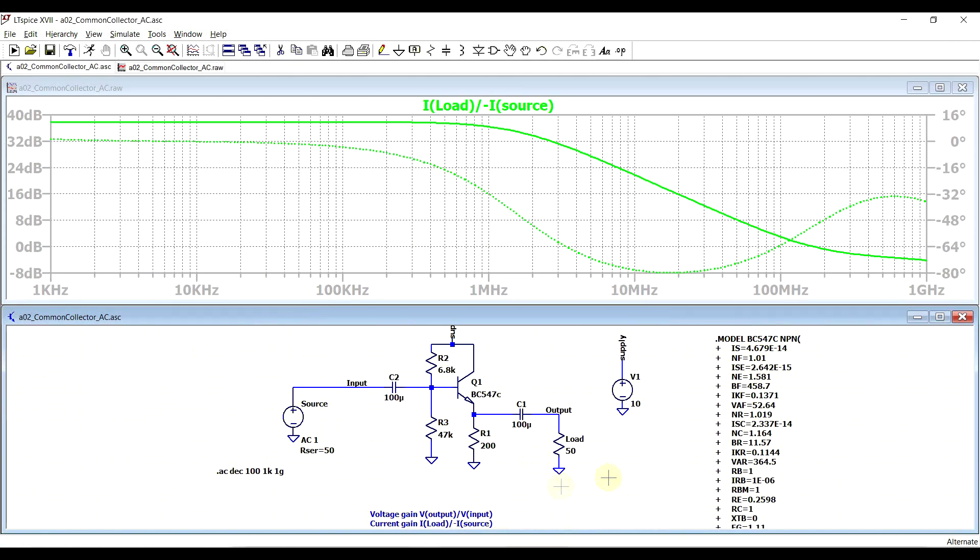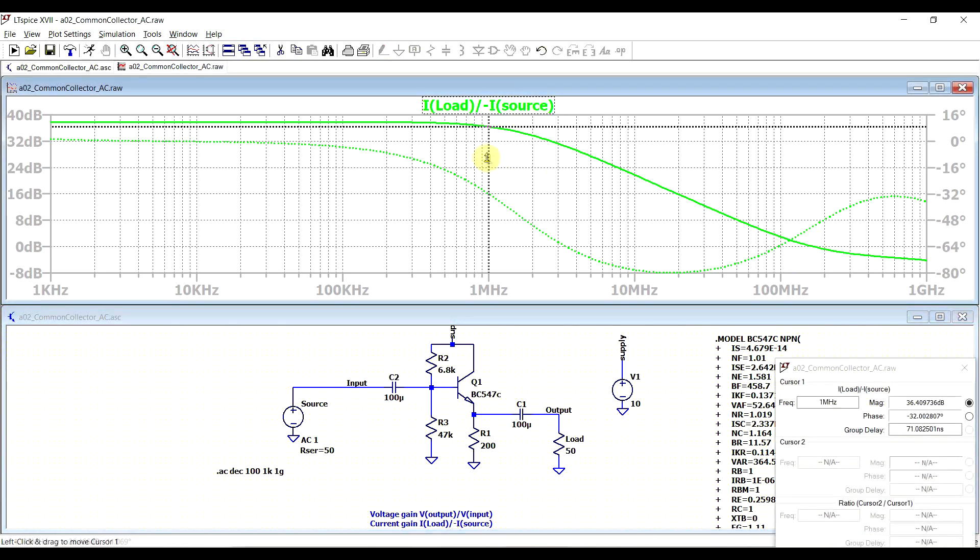This is the ratio between the current running through the load and the current coming from the source. We can see in a similar fashion that it's quite stable up until a point, and then it starts to slowly drop off, and it goes through unity through the zero decibel point somewhere in the 170 megahertz range.